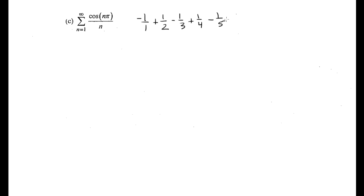In letter C, we are asked to see if this series converges. If we plug 1 in, we have cosine of π, and cosine of π is negative 1, over 1. Then if you plug 2 in, cosine of 2π is 1, so we have plus 1 over 2, then minus 1 over 3, plus 1 over 4, minus 1 over 5, and so on. So what this really is, is sigma from n equals 1 to infinity. Rather than writing cosine of nπ, we can write negative 1 to the n over n, and these two series are exactly the same.